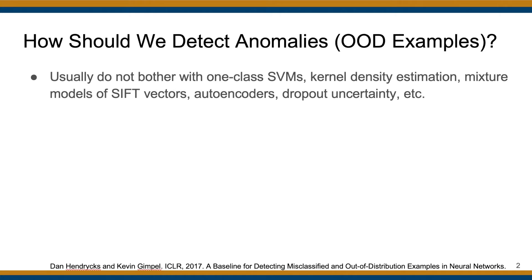For instance, one-class support vector machines — if you fit one of those models to the raw images through scikit-learn, the resulting detector won't be very good. Even if you do one-class SVMs on top of deep neural network representations, you'll tend to do better by using some simpler technique. Kernel density estimation is another natural solution, but unfortunately these techniques don't work well when your input size is large, tending to work better when the dimensionality of your data is much smaller or highly structured.